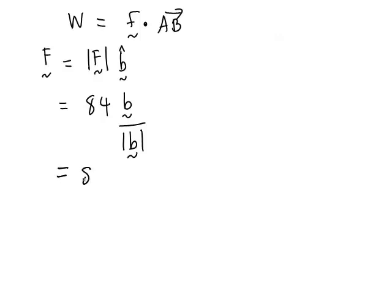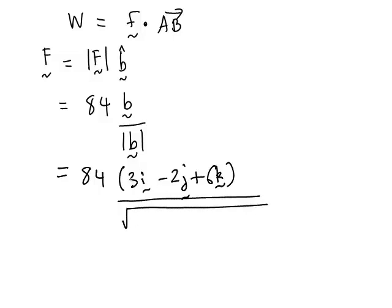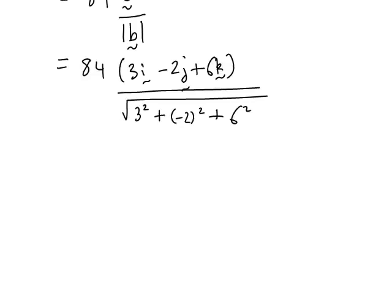That is always worked out as the vector B divided by the magnitude of vector B. So that is going to be 84 times B, and our vector was 3i minus 2j plus 6k. How do we work out the magnitude of that? Well it's just the square root of these components 3, -2, 6 squared. So 3 squared plus negative 2 squared plus 6 squared and then the square root of that.